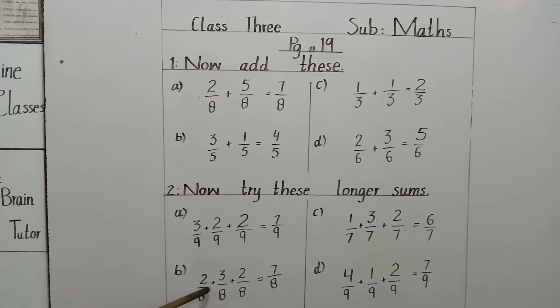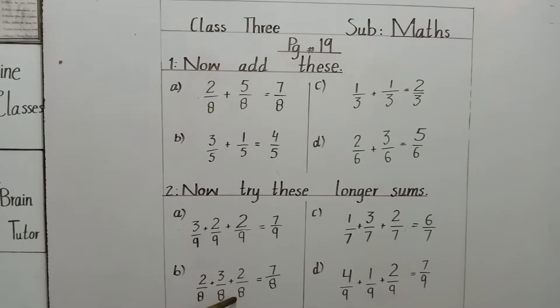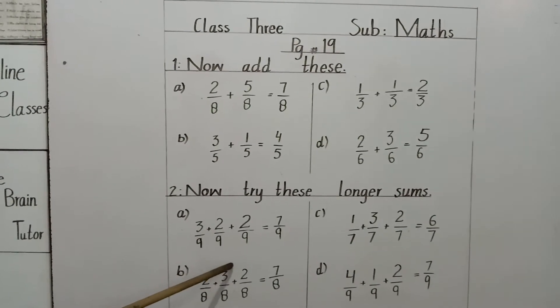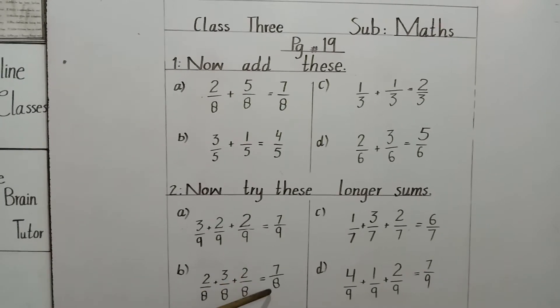Here also 2 by 8 plus 3 by 8 plus 2 by 8. 8 is same. So we have written here 8. 2 plus 3 is 5. 5 plus 2 equals 7. 7 by 8.